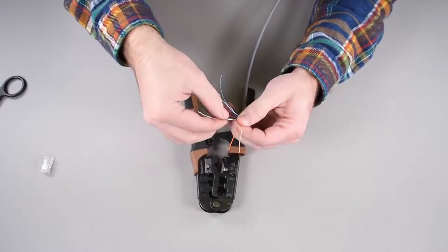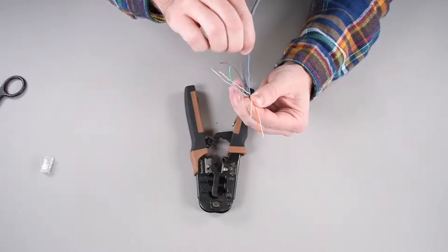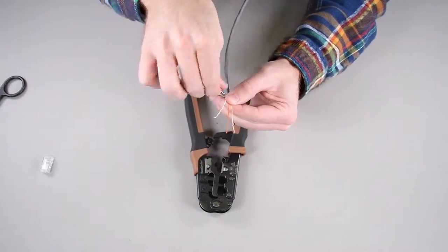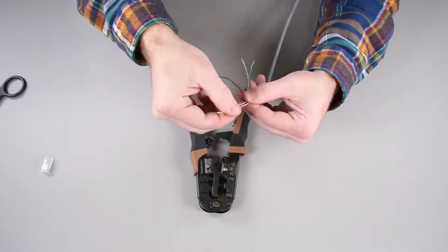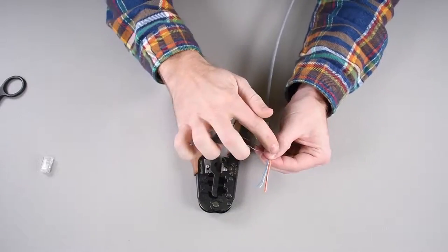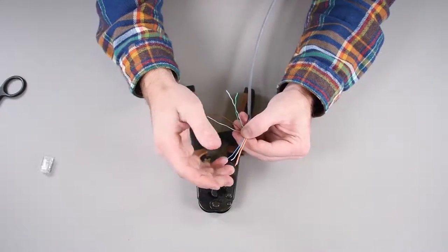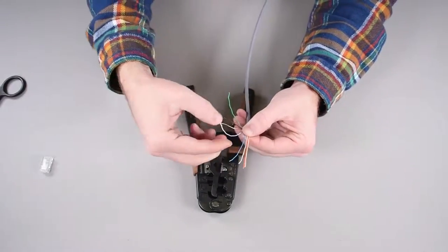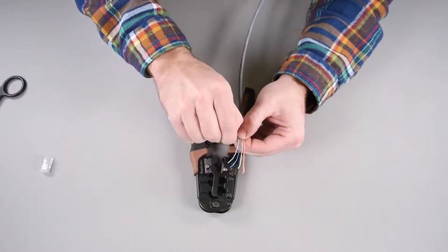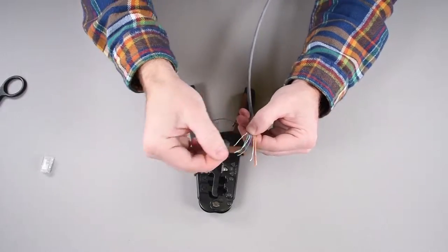So orange white, orange, green white, blue. I'm also holding them with this hand to keep them flat and in order. And then blue white, green, brown white, brown.